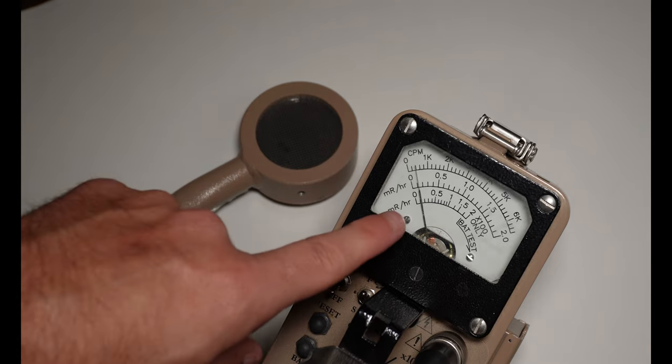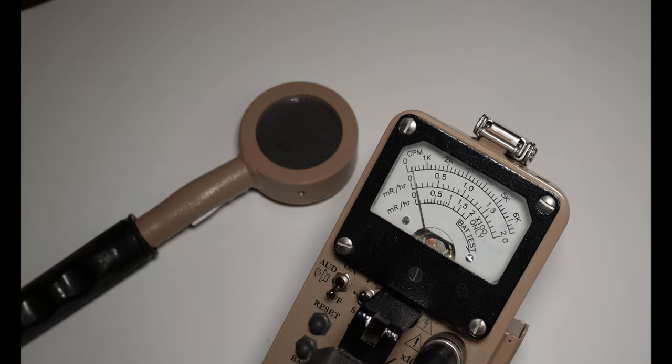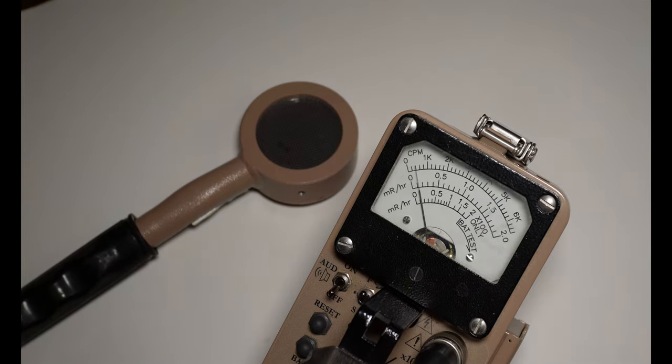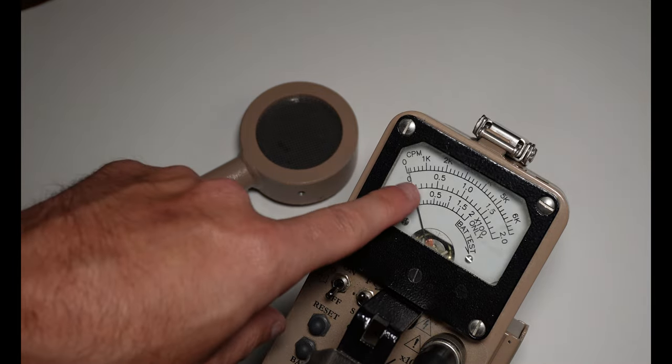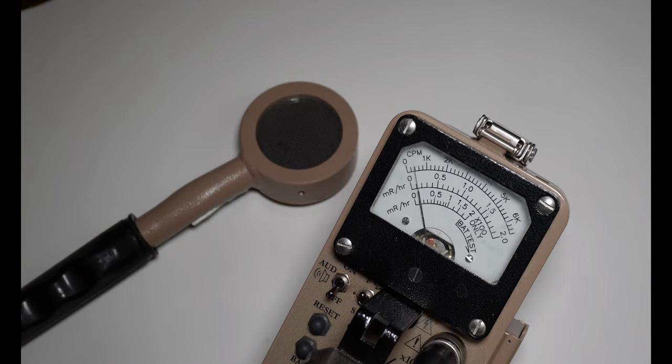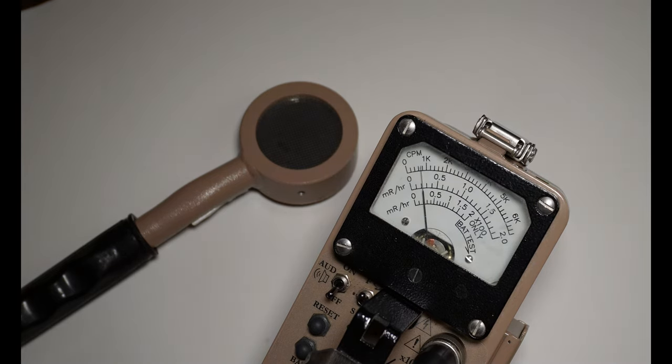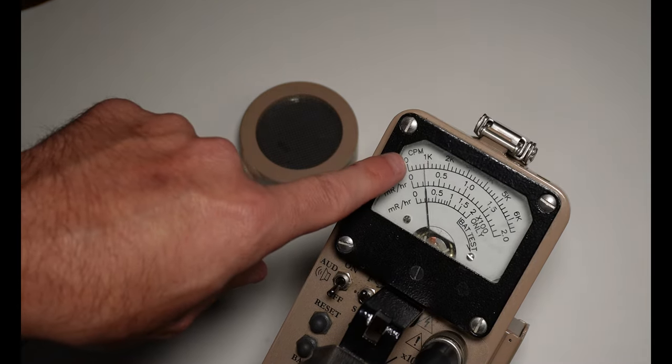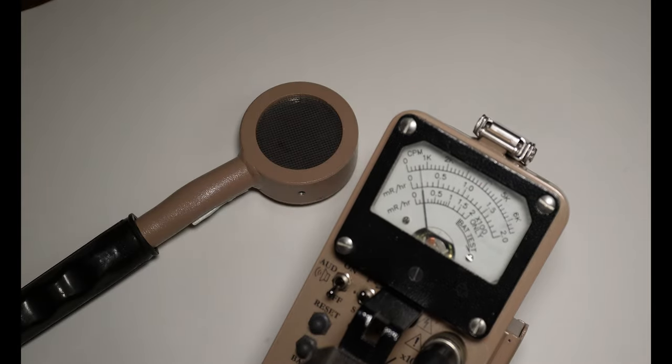So you'll note on the instrument that we have three different scales on the face of the survey meter. The first scale, or the bottom scale, is in MR per hour. The second scale, or the mid scale, the middle range, is also in MR per hour. And then the top one, that goes across the top, is in counts per minute.